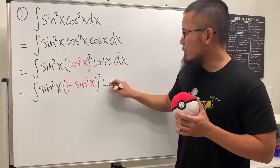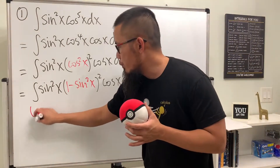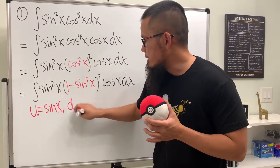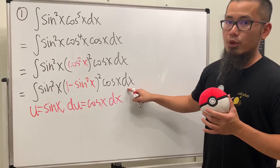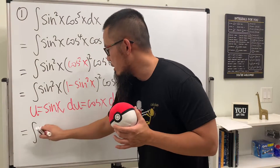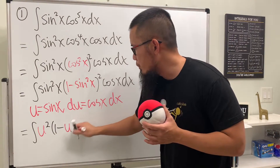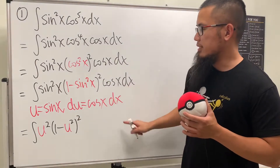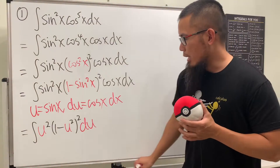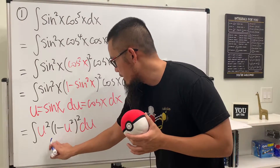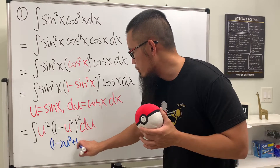With all this work we're just getting ready, and now we can do a u-substitution. Let u equal sine x, then du equals cosine x dx — that's exactly what we have. So this becomes the integral of u squared times one minus u squared, squared, times du. Now for the rest we just do some algebra: one minus u squared, squared, expands to one minus 2u squared plus u to the fourth power.